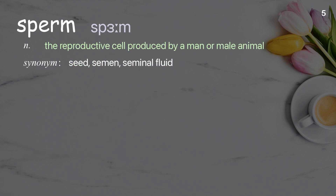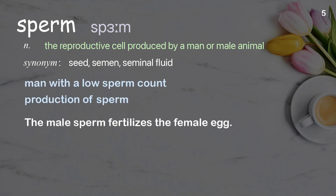Sperm. The reproductive cell produced by a man or male animal. Examples: man with a low sperm count, production of sperm. The male sperm fertilizes the female egg.